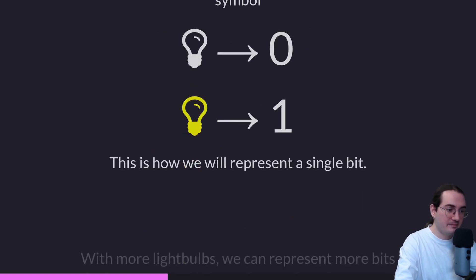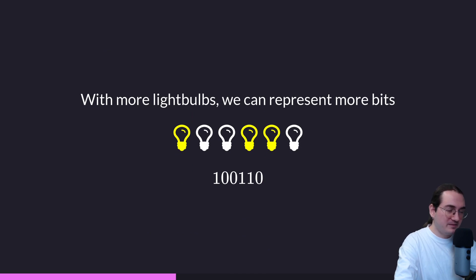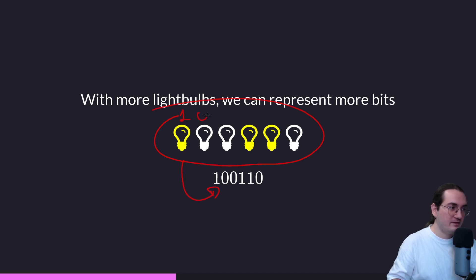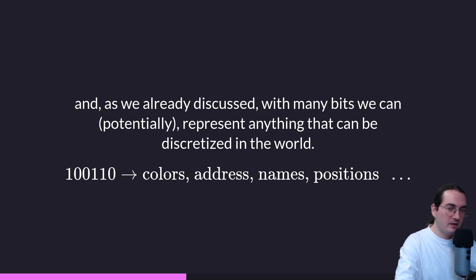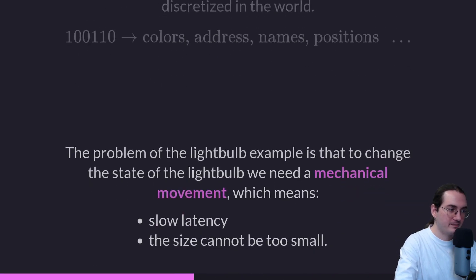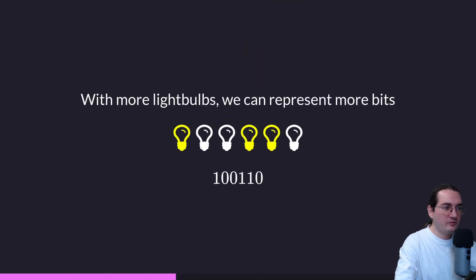This is the basic idea of how we can represent a single bit using a physical phenomenon like a light bulb. With more light bulbs we can represent more bits — for example, a sequence of light bulbs can represent the sequence 1, 0, 0, 1, 1, 0. With many bits we can potentially represent anything that can be discretized: colors, addresses, names, positions, games, physics engines, and so on.